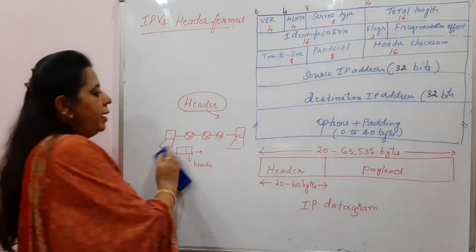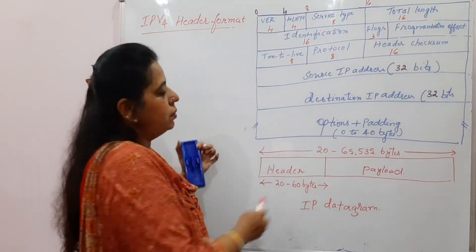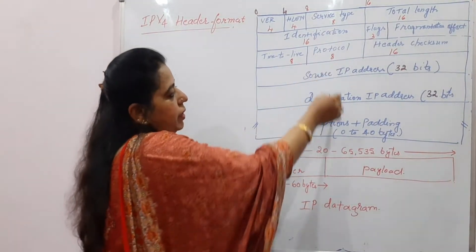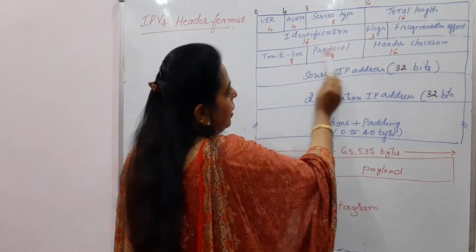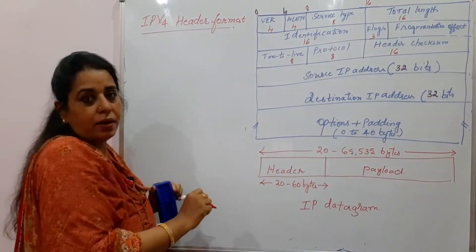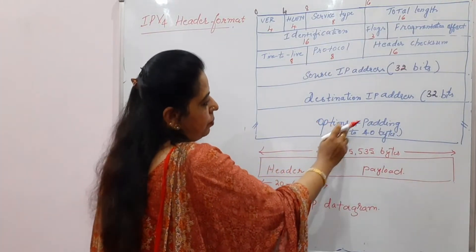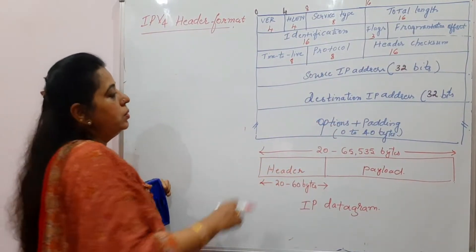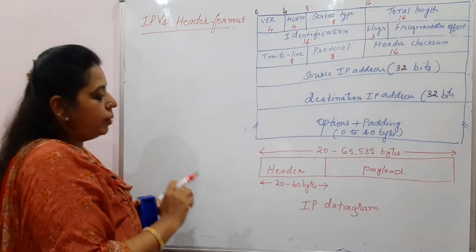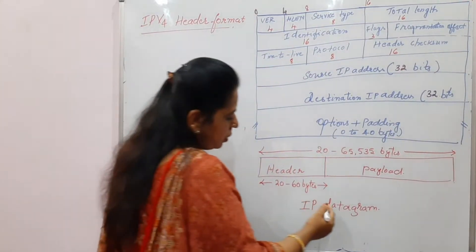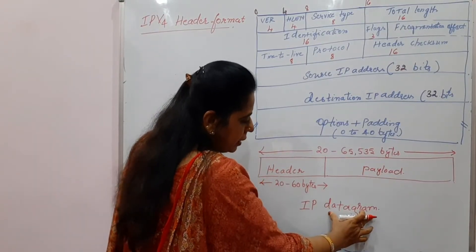That information is divided into fields. Totally, if you look here, there are 12 fields. There is also an optional field called options and padding. Let us look into each of these fields in the datagram. You should know that we call the header part and the payload part together as the datagram. Whatever is written in blue color font is only the header part.